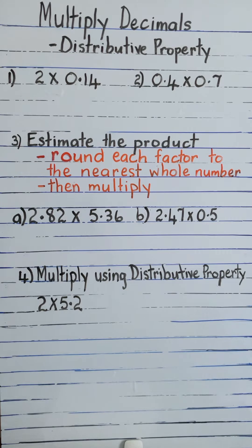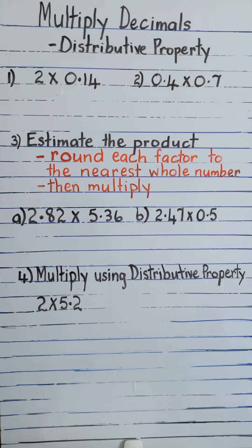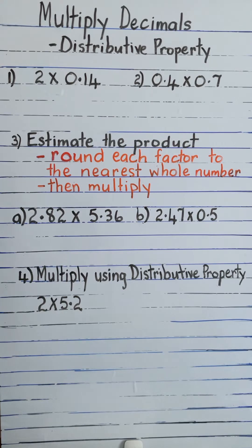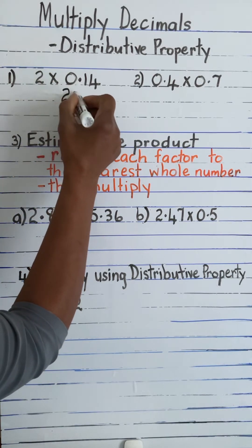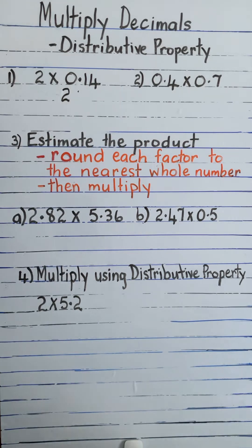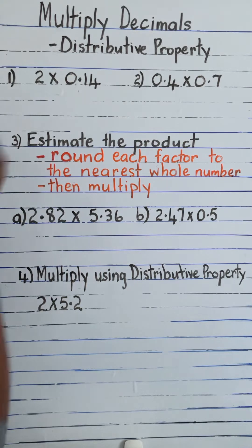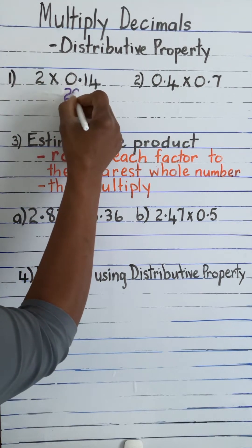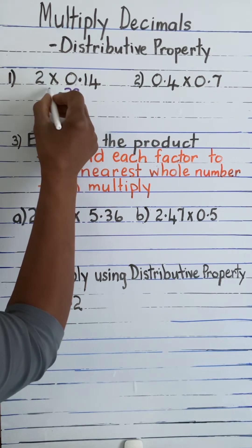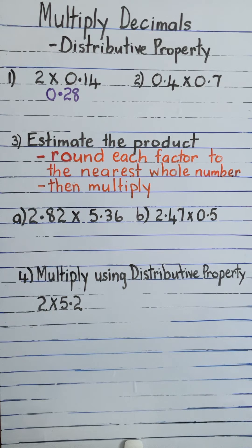Our first example, we're multiplying a whole number by a decimal: 2 times 0.14. So we're going to multiply 2 by 14 and then we will have two decimal places. 2 times 14 is 28, and we have two places of decimal, so therefore 2 times 0.14 is equal to 0.28.